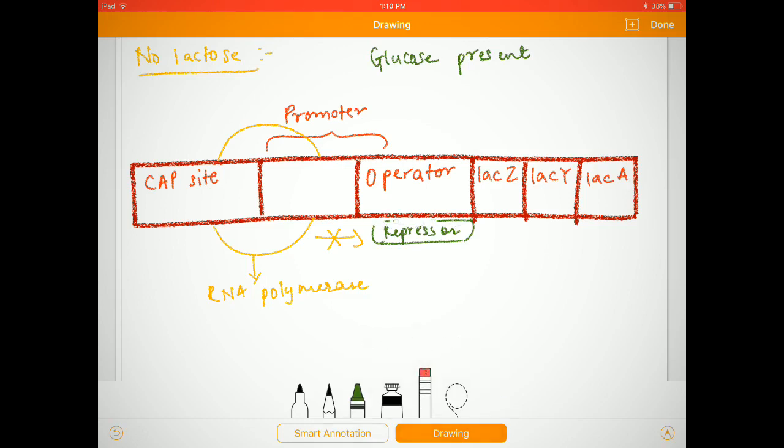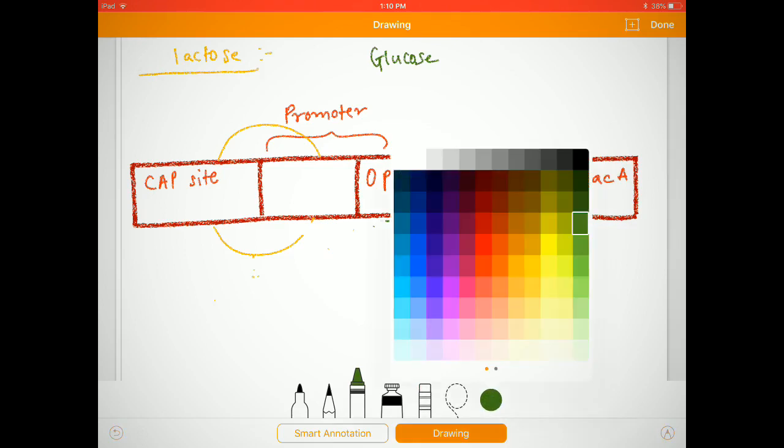So this was the first point. Next, what will happen if the cell is kept in an environment which contains lactose? Lactose is basically a sugar which is a disaccharide. As we all can see, the RNA polymerase will bind to the promoter region again.